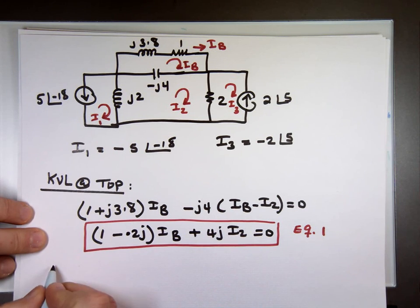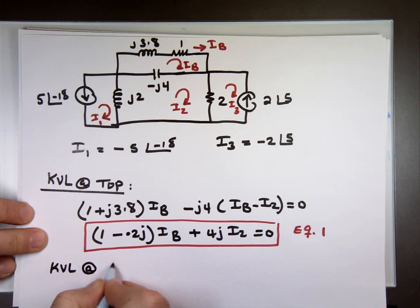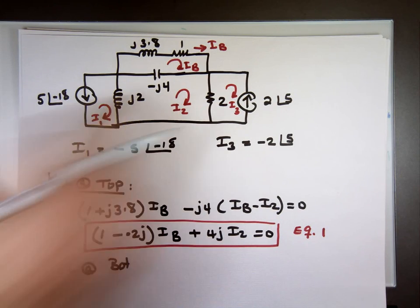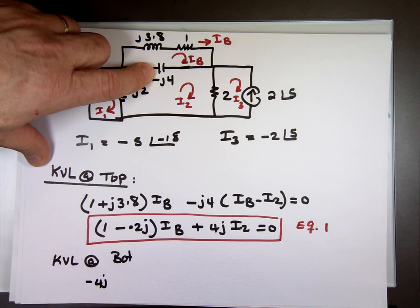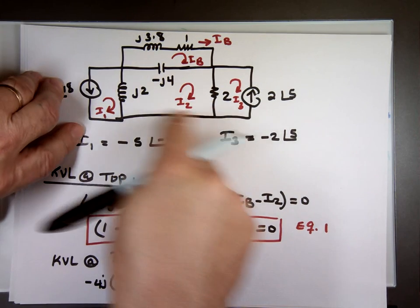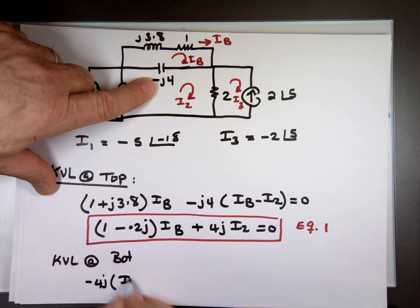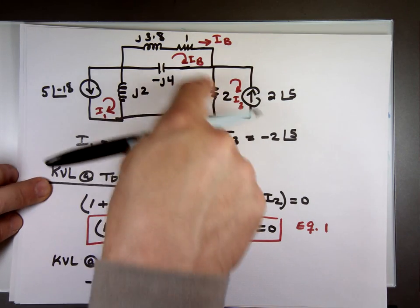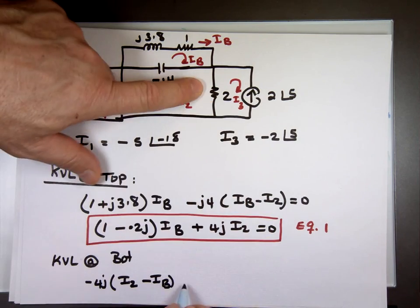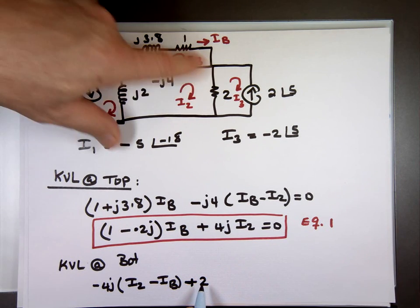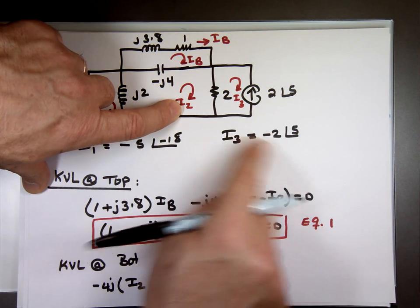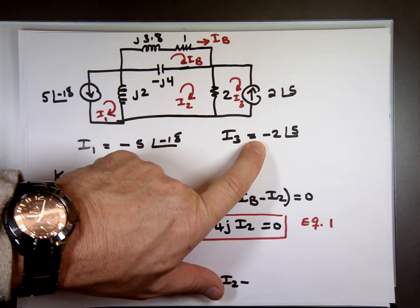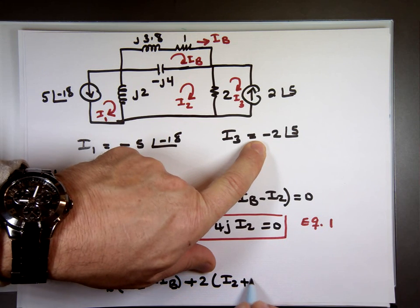Now let's do another KVL at the bottom. That's this one. Let's begin with the negative 4J. It doesn't matter. I'm going this way traveling. So it's I sub 2 minus I sub B. Let's get to this one. I'm traveling this way. So it's I sub 2 minus I sub 3. And what's I sub 3? It's that number. Right? So minus minus that will make it a plus. 2 angle 5.